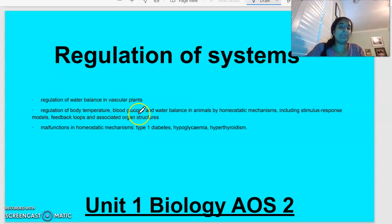Regulation of body temperature, blood glucose and water balance. We're going to be looking at homeostasis, the stimulus response model, positive and negative feedback loops, and the malfunctions of homeostatic mechanisms. So what type 1 diabetes is, hypoglycemia and hypothyroidism.